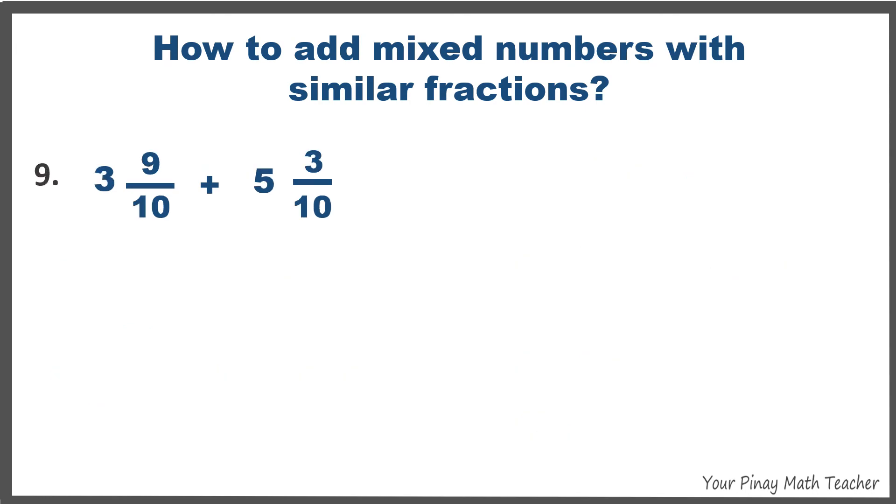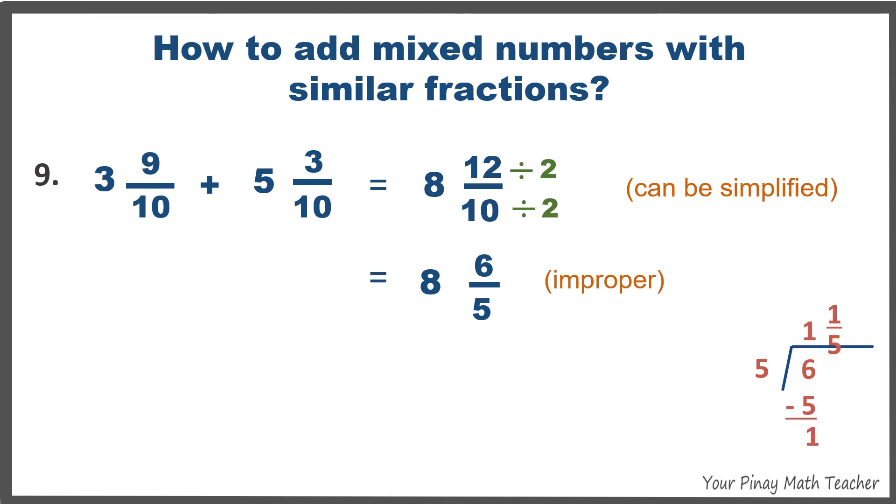Number nine, 3 plus 5 is 8. 9 tenths plus 3 tenths is equivalent to 12 tenths. This can still be reduced by 2. So, bring down 8, and the reduced form is 6 fifths. Since this is still improper, we have to divide 6 by 5 to make it into a mixed number, 1 and 1 fifth. So, bring down 8. Do not copy 6 fifths anymore. Instead, you have to replace it with 1 and 1 fifth. Put them together, we have a sum of 9 and 1 fifth.